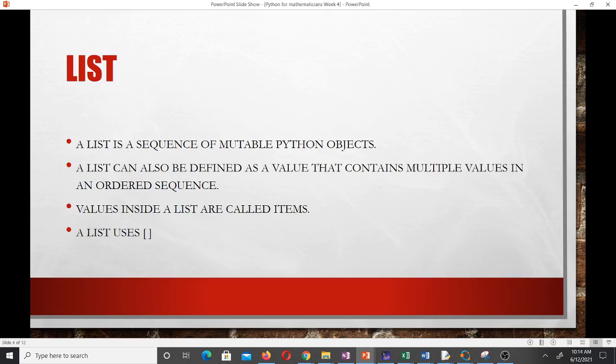Now let's look at a list. A list is a sequence of mutable Python objects. Mutable means it can be changed. When you say immutable, that means it cannot be changed. So a list is a sequence of mutable Python objects, so we have a lot of objects together but we can change it. A list can also be defined as a value that contains multiple values in an ordered sequence.